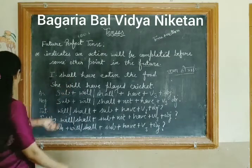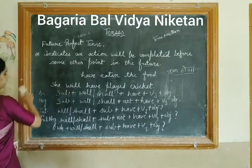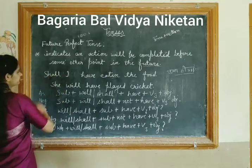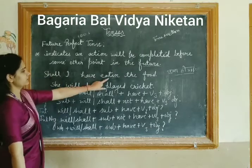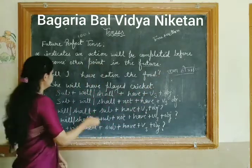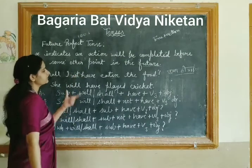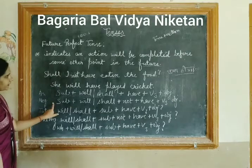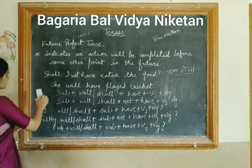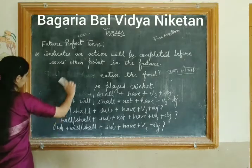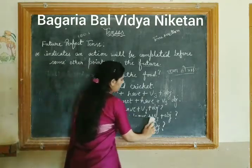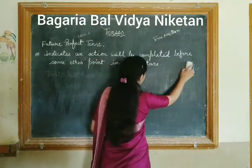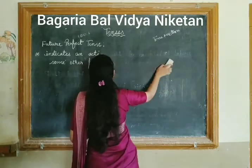These were our assertive sentences; now we convert them to interrogative. For example: 'Shall I have eaten the food?' — meaning 'Will I have had my meal?' And for negative interrogative: 'Shall I not have eaten the food?' — meaning 'Will I not have had my meal?' This is how we follow the structure to express sentences in any tense.